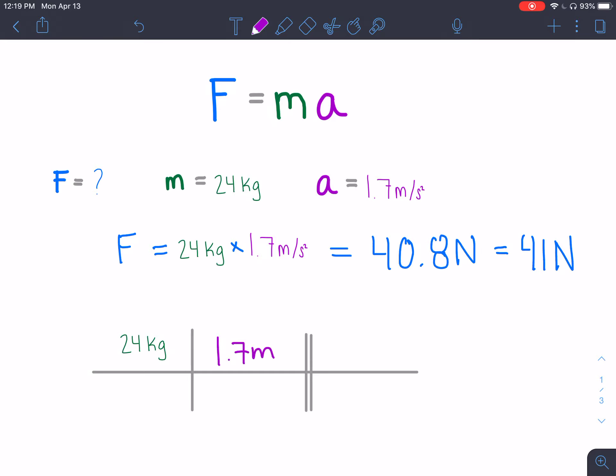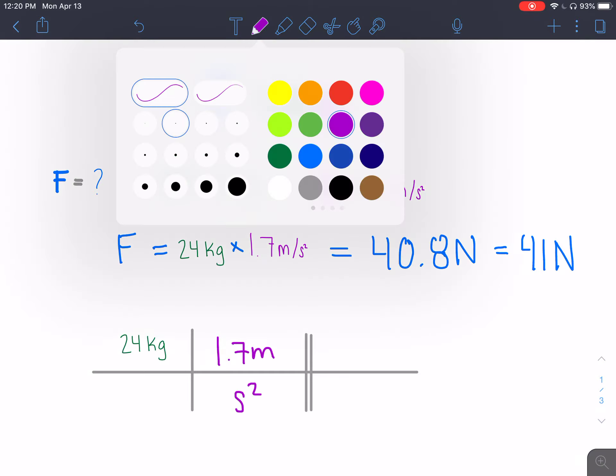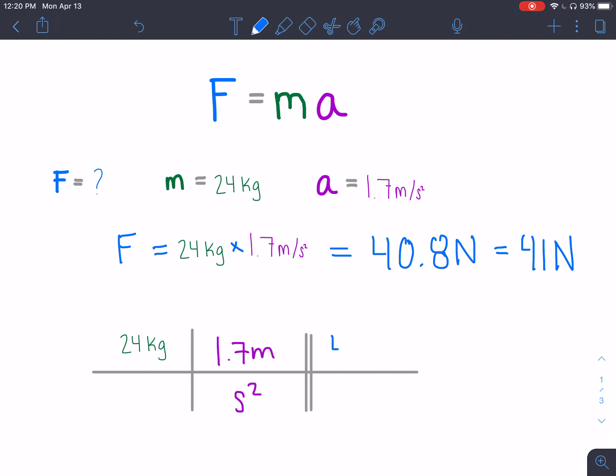Which would result in the 41 kg times m over second squared, which is equivalent to the 41 Newtons.